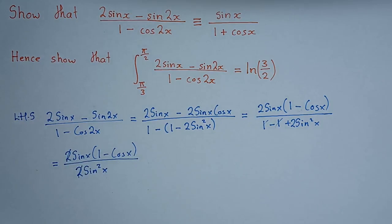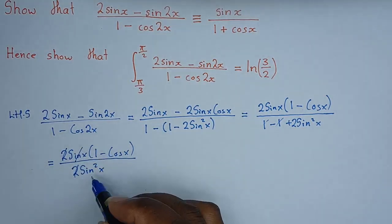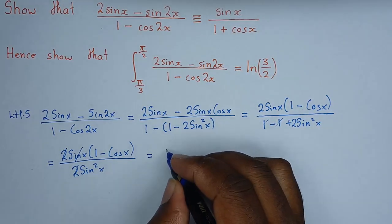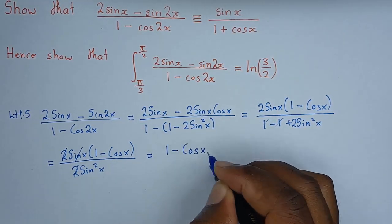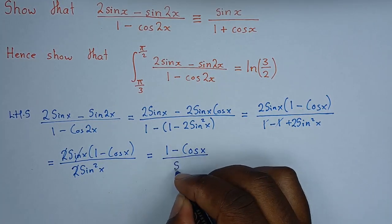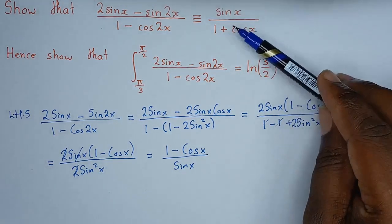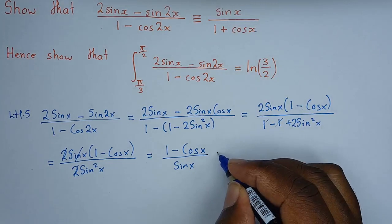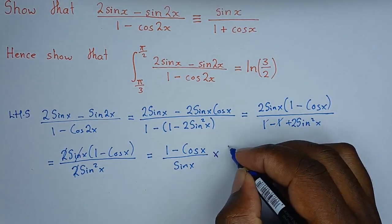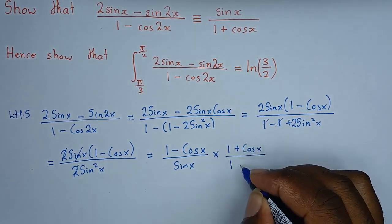The two 2s cancel, and one sin x cancels from numerator and denominator, leaving us with (1 − cos x) / sin x. However, we notice this is the opposite form of what we need, so we must rationalize the numerator by multiplying by the conjugate, which is (1 + cos x) / (1 + cos x).